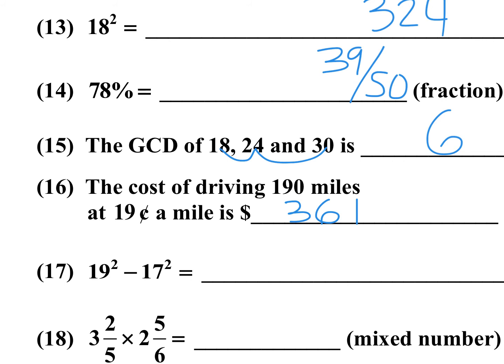Number 16: 19 cents times 190. 19 times 19 is 361, and since it's dollars and cents the answer needs a zero and a decimal point — you cannot write 36.1, that would be incorrect. You must write the proper dollars-and-cents format. Number 17: difference of squares. a² minus b² equals (a minus b)(a plus b). Here, 19 plus 17 is 36, times 2 equals 72.